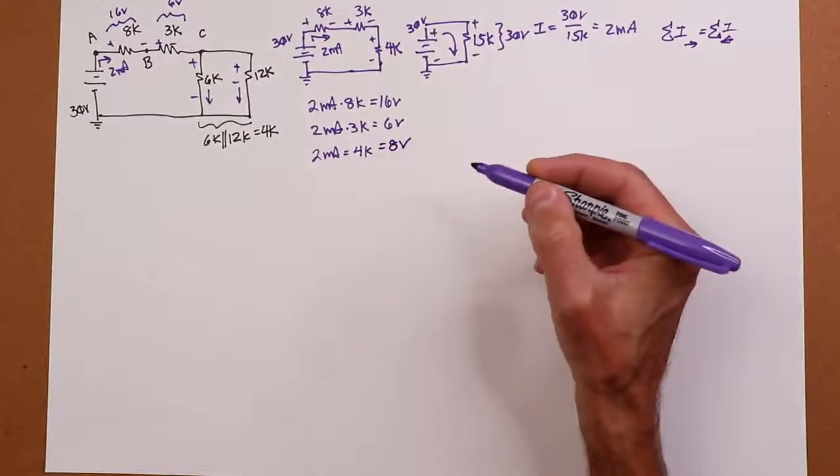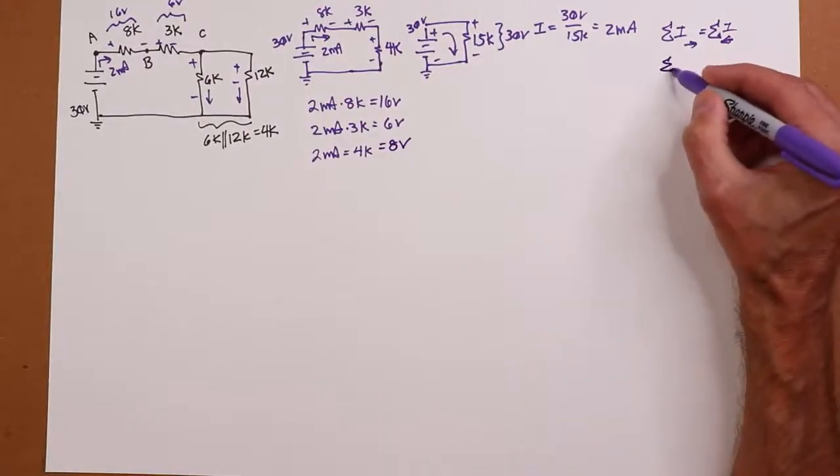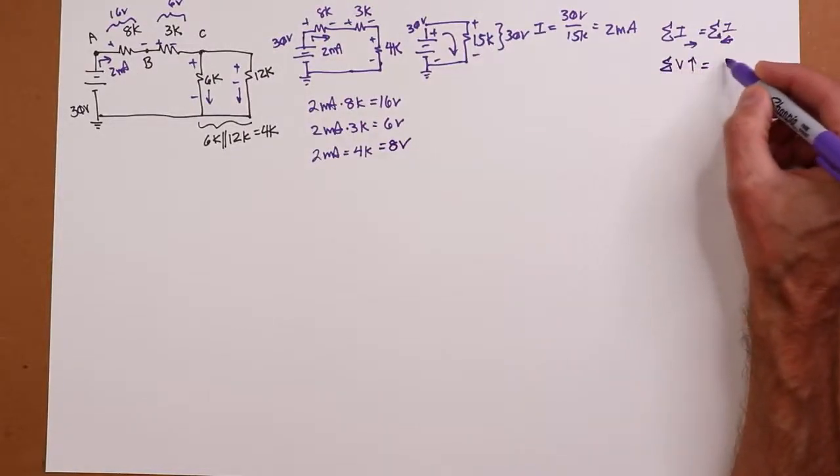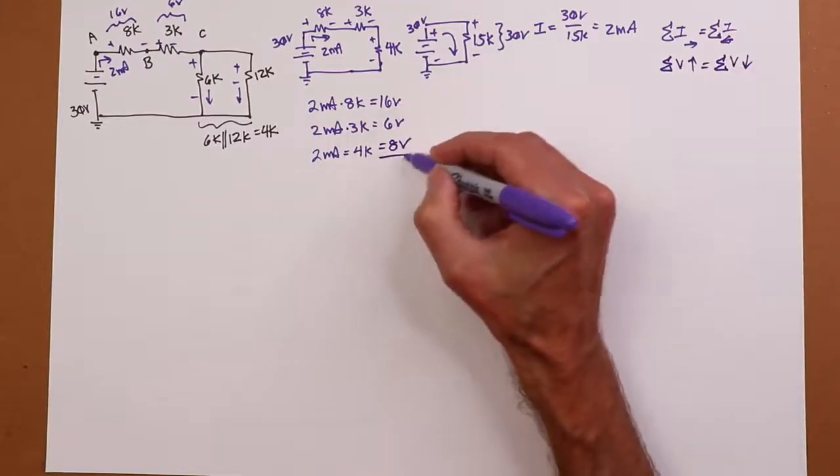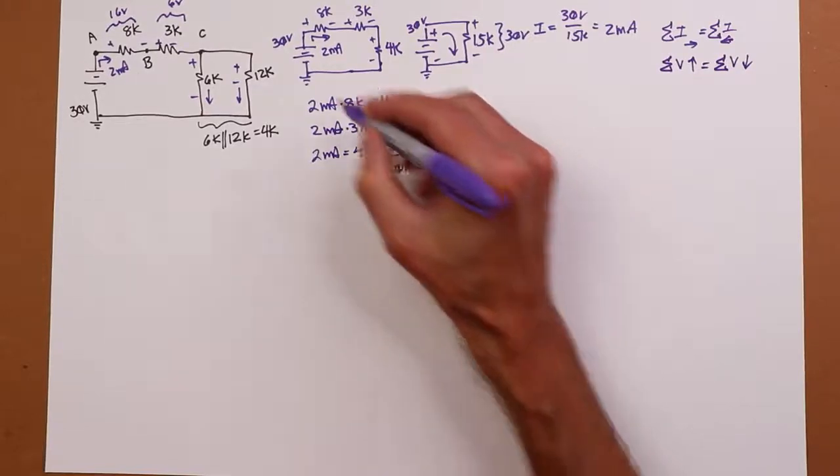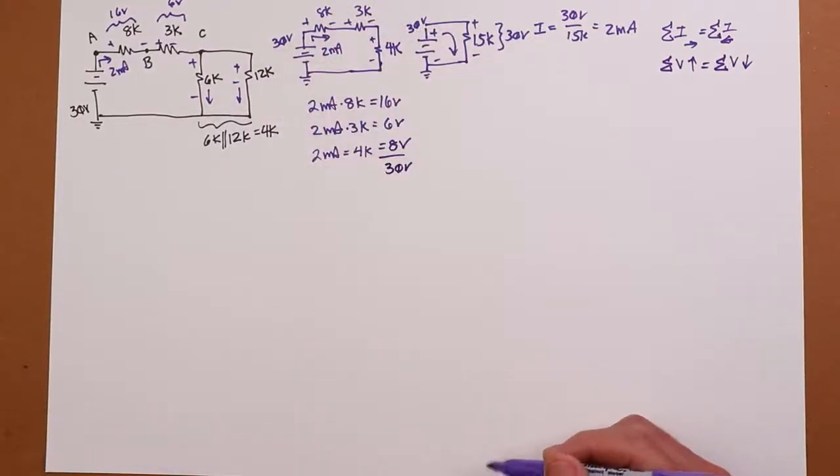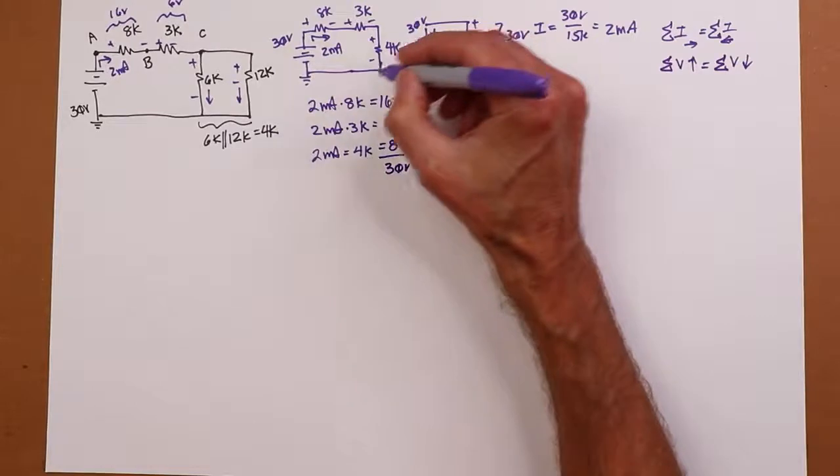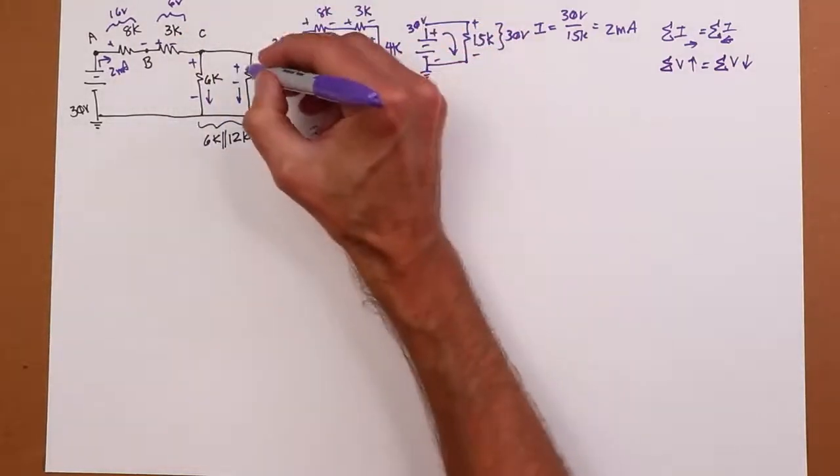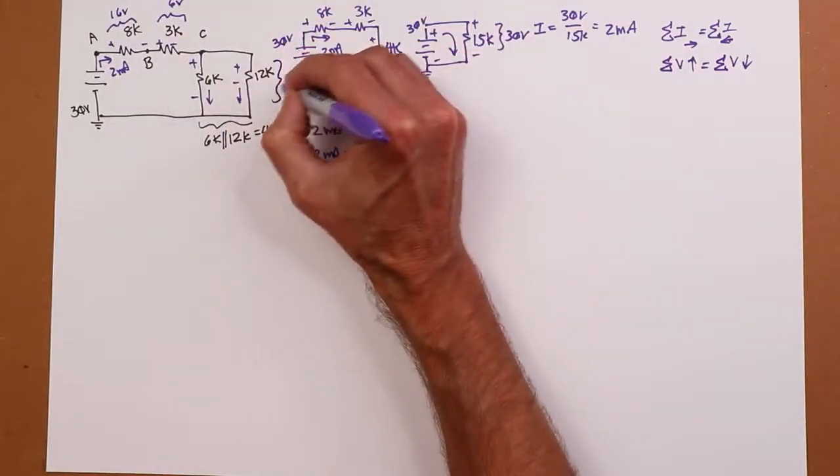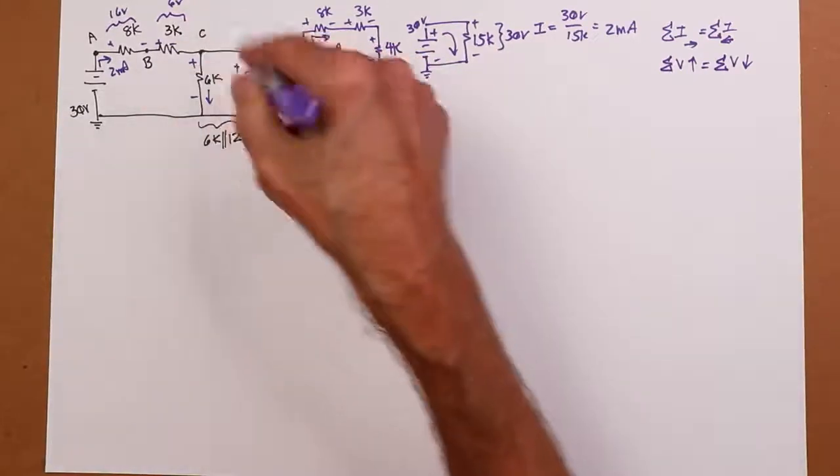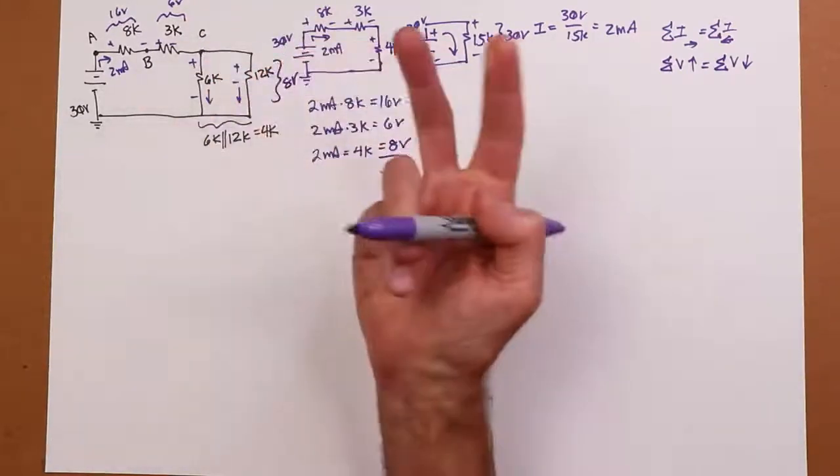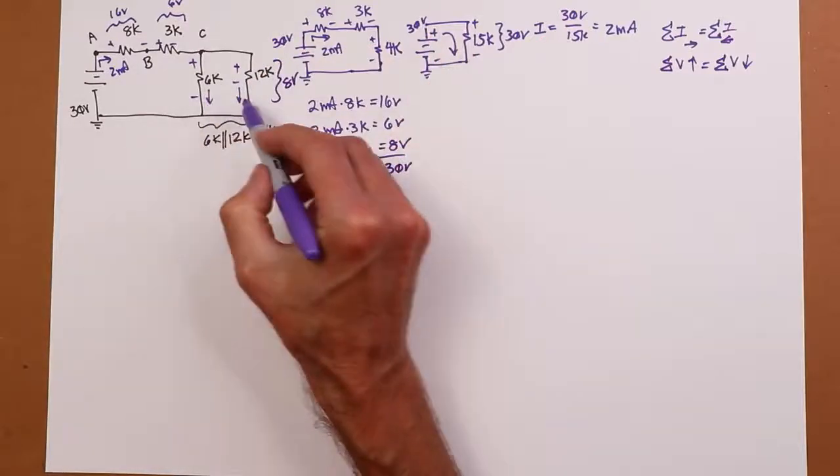All right. Well, let me just do a KVL check. Summation of voltages rise has to equal summation of voltage drops. 16 and 6, 22 and 8, that's 30. That equals my rise of 30 volts. So I pretty much have everything. I know this is 8 volts across there. Knowing that, I can now find the only two things we really don't know are these two currents.